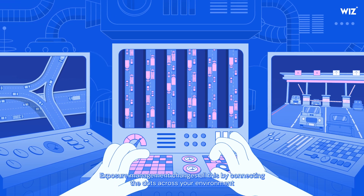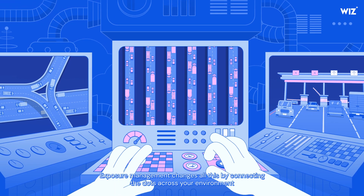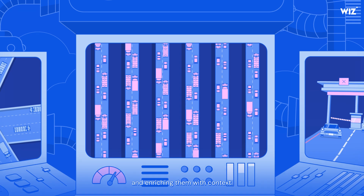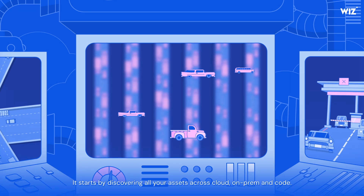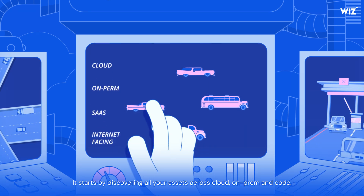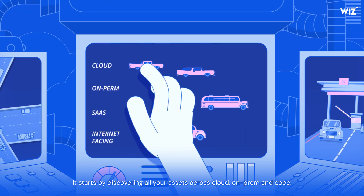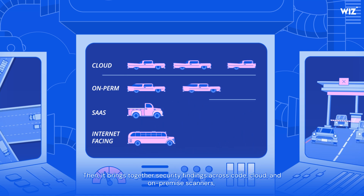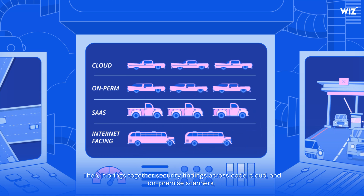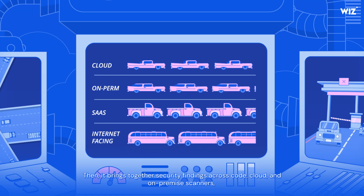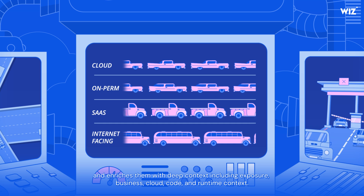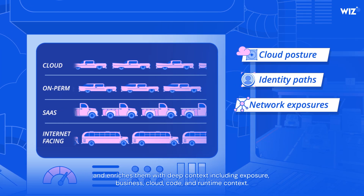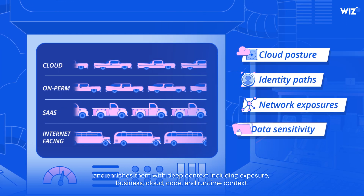Exposure management changes all this by connecting the dots across your environment and enriching them with context. It starts by discovering all your assets across cloud, on-premise, and code. Then it brings together security findings across code, cloud, and on-premise scanners, and enriches them with deep context including exposure, business, cloud, code, and runtime context.